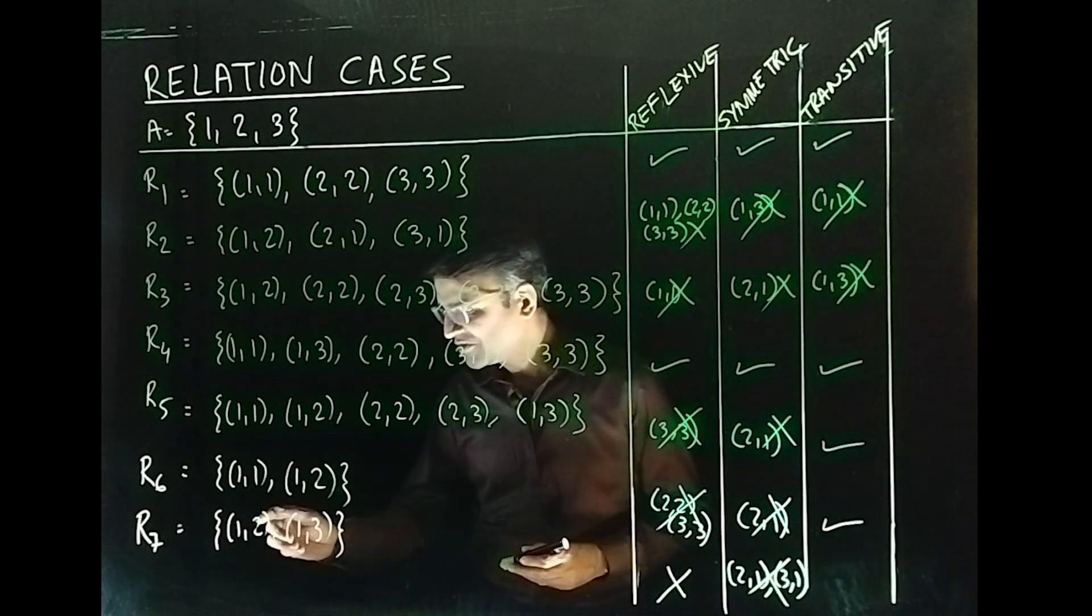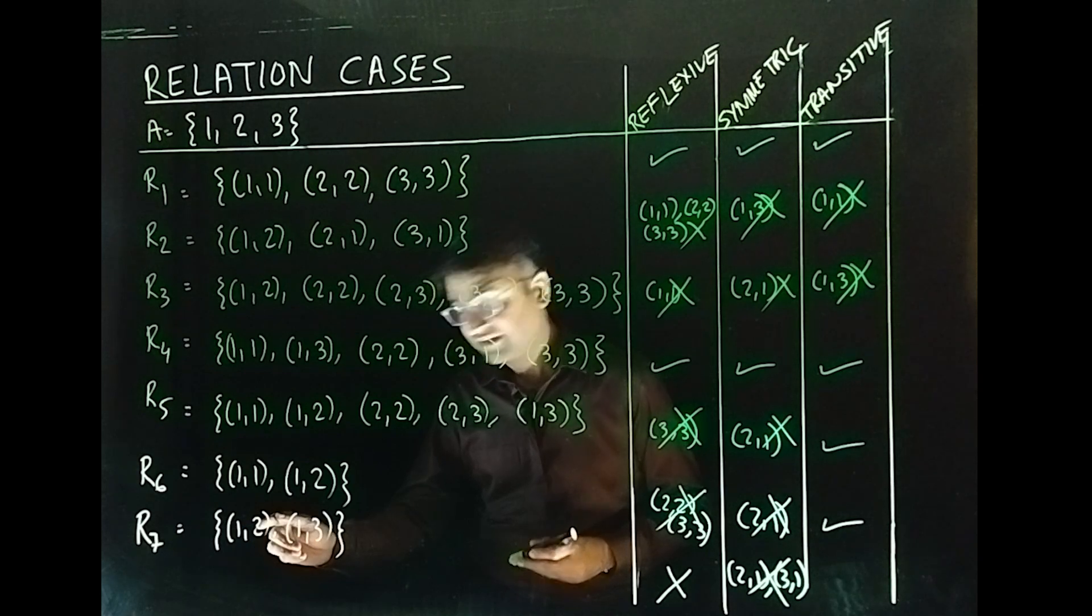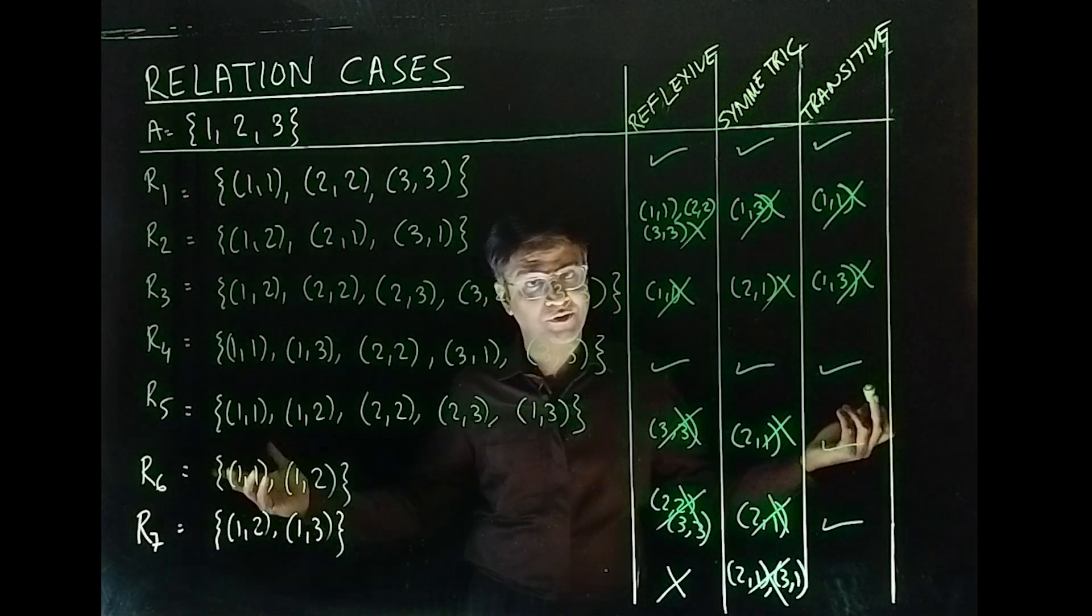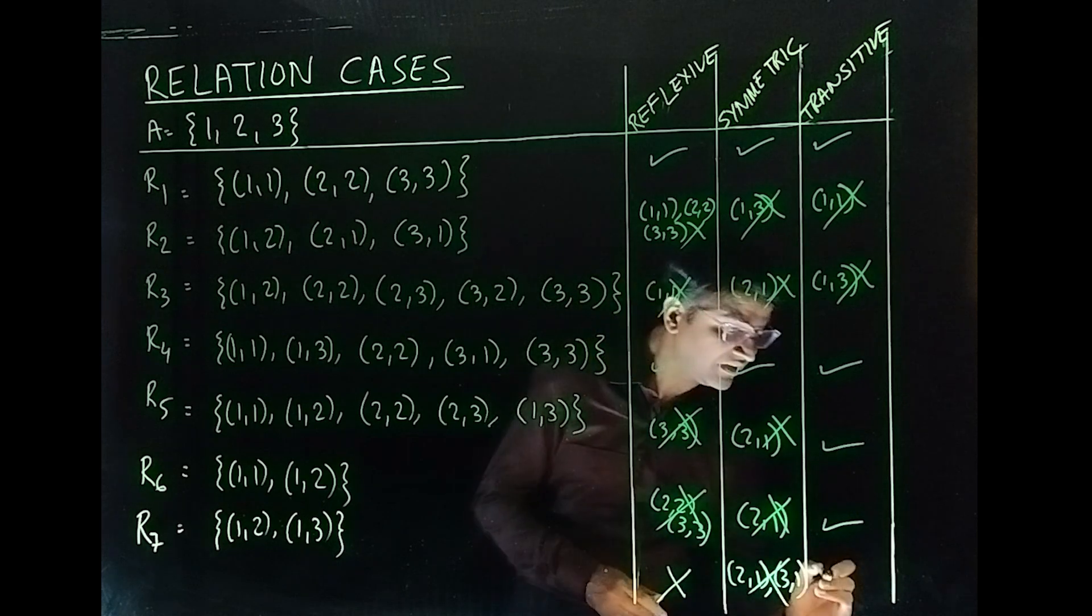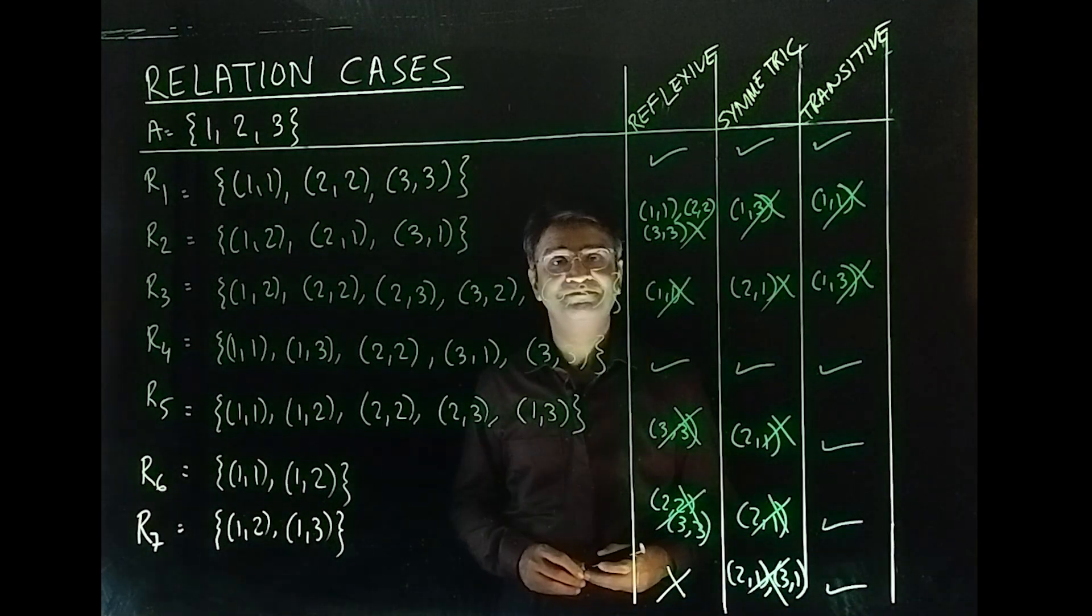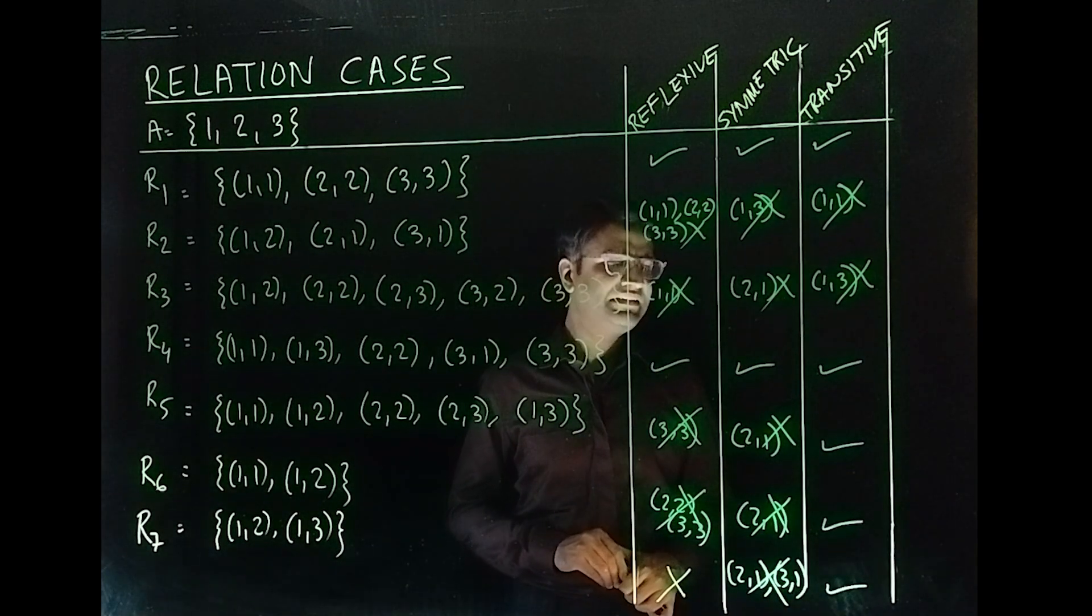How about this one? We have (1,2) it does not have a (2, something) so no problem it is transitive. (1,3) again you don't have (3, something) so yeah this is also transitive.